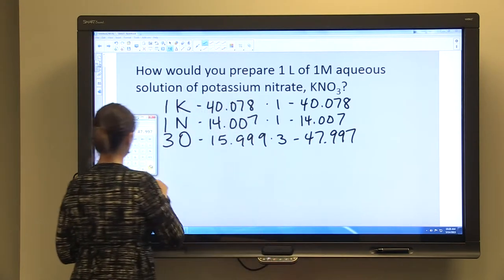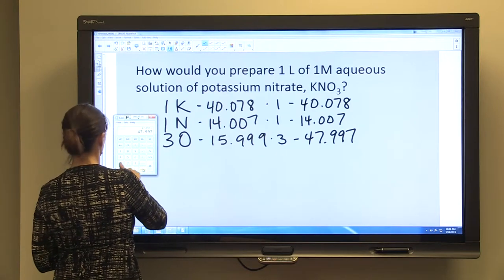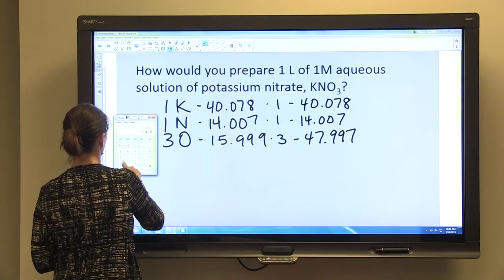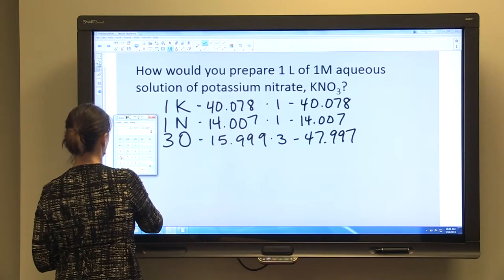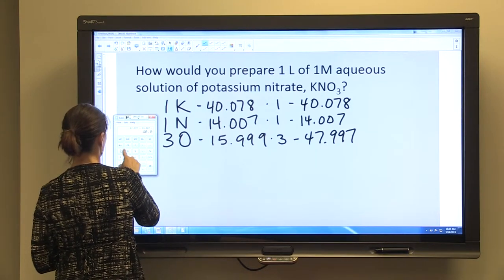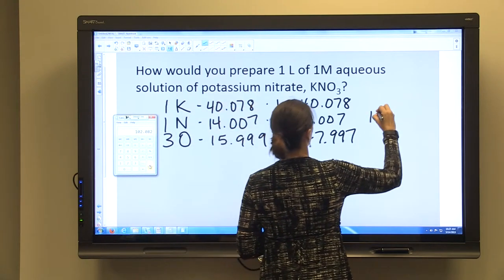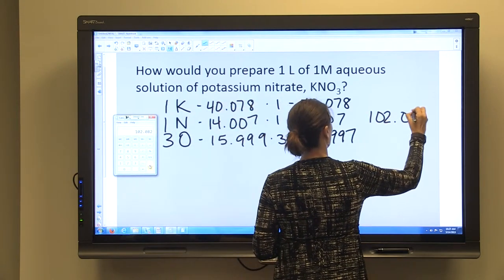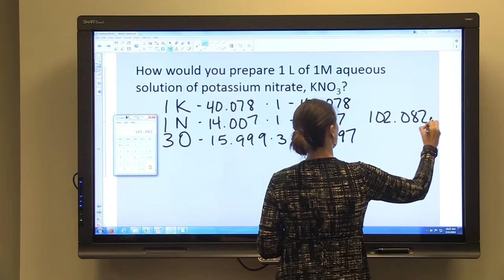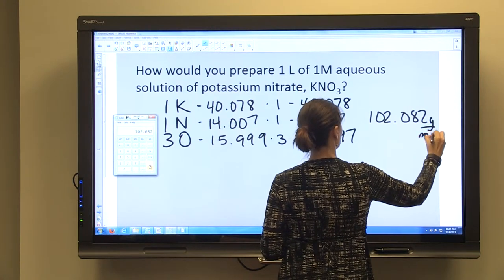And then we're going to add all three of those together. That's going to give us a total molecular weight of 102.082 grams per mole of potassium nitrate.